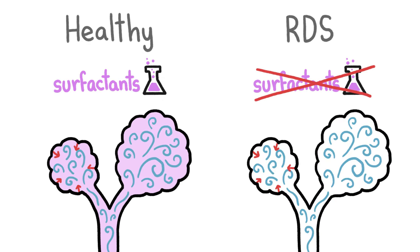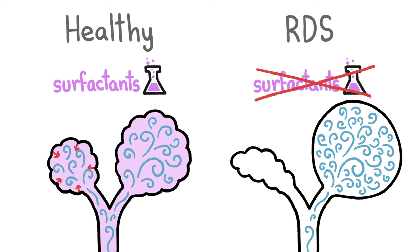Preemies' lungs haven't yet developed enough of these surfactants, so the small alveoli squeeze too much and collapse, while the large ones keep blowing up and get stretched out.